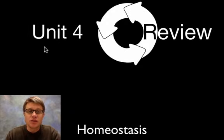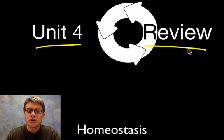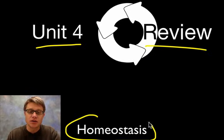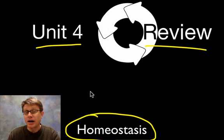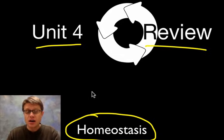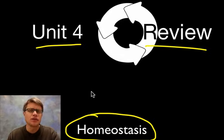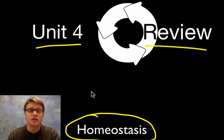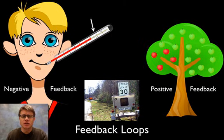Hi, it's Mr. Andersen and welcome to the unit 4 review. In this review I'm going to talk about homeostasis — homeostasis at the level of a body, so how do we keep our temperature constant on the inside if we're endothermic, or homeostasis at the level of a population or even an ecosystem. So it's a pretty diverse unit and I'll try to tie it all together.